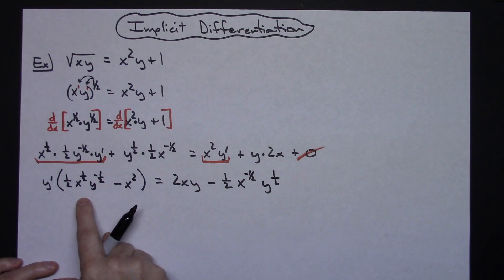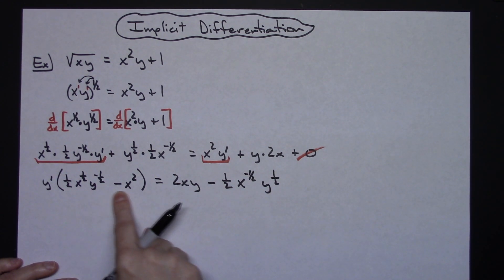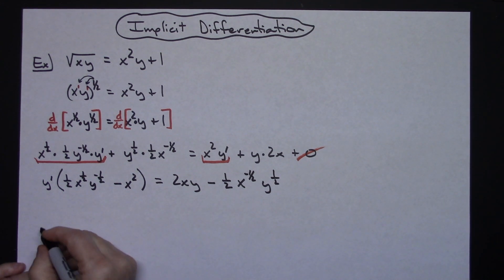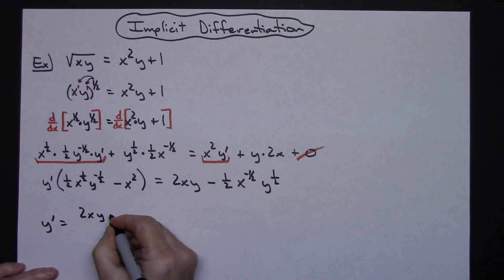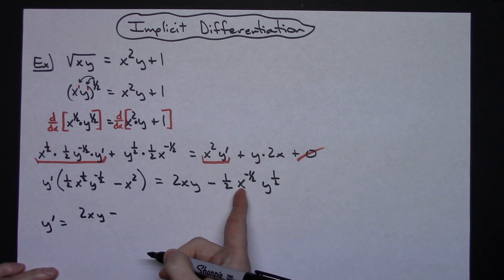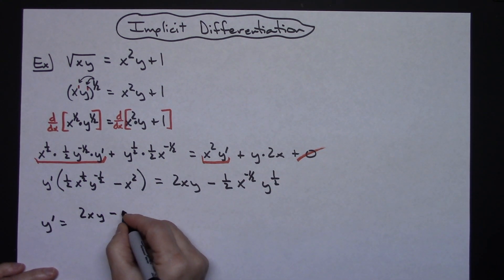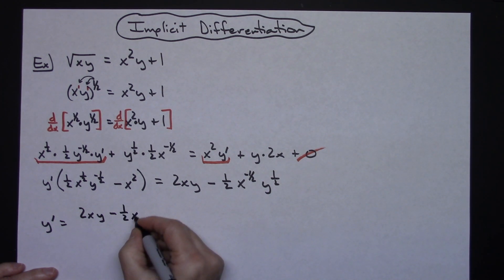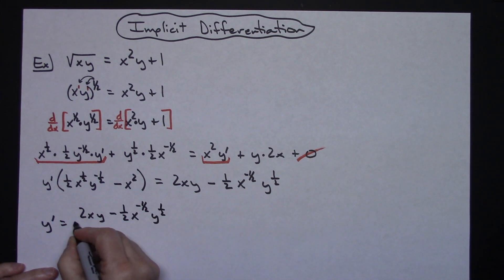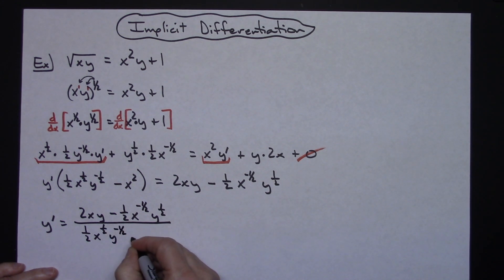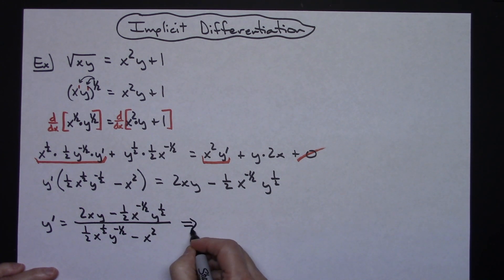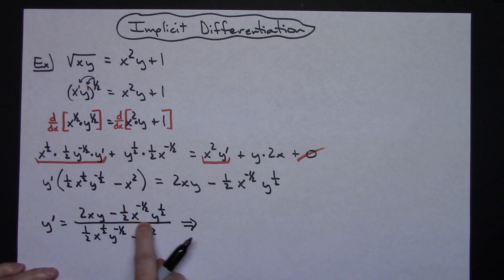At this point I can go ahead and solve for y prime by dividing both sides by that expression. So y prime equals 2xy minus 1 half x to the negative 1 half, y to the 1 half — all over 1 half x to the 1 half, y to the negative 1 half, minus x squared. Now let's start manipulating this: move the negative exponents, make them square roots. The first term stays the same.